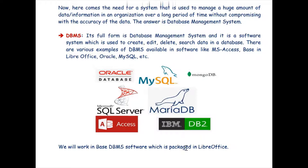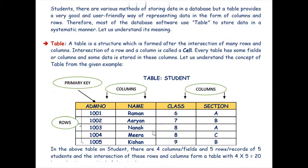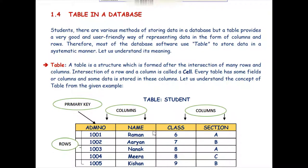In Class 8th, we will work with the LibreOffice Base package. As you can see on screen, this is a screenshot of LibreOffice Base. To work in a database, we first need to understand the concept of a table. A table is a structure formed by the intersection of many rows and columns. Every intersection of a row and a column is called a cell, just as in a spreadsheet or Microsoft Excel.